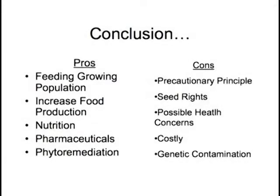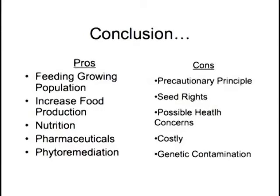In conclusion, genetically modified organisms have many advantages, especially feeding a growing population, increasing food production, increasing nutrition content, pharmaceuticals, and phytoremediation. However, genetically modified organisms also have many issues, such as the uncertainty that lies in the future, ownership of seeds, possible health risks, high expensive development, and genetic contamination.